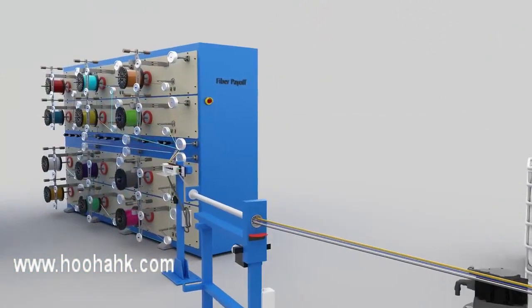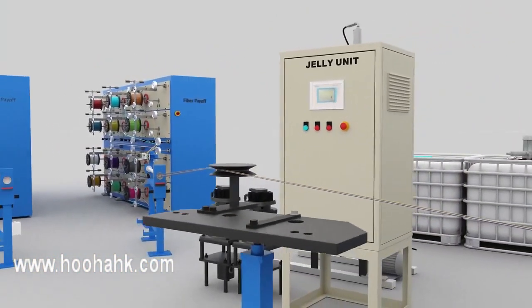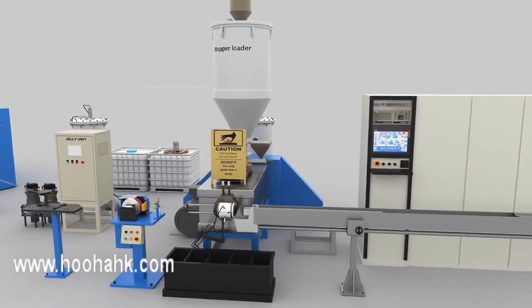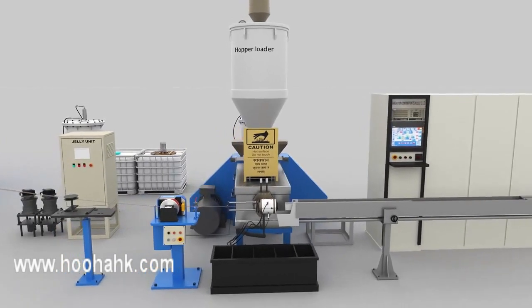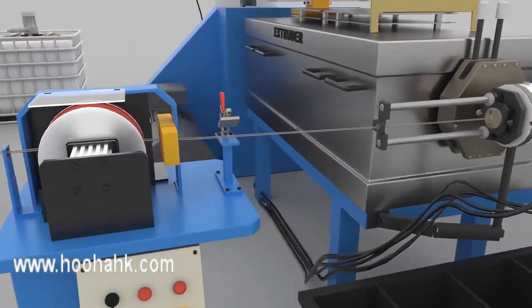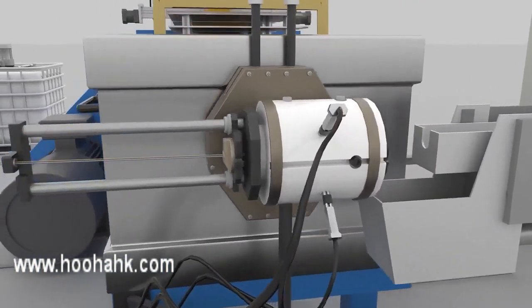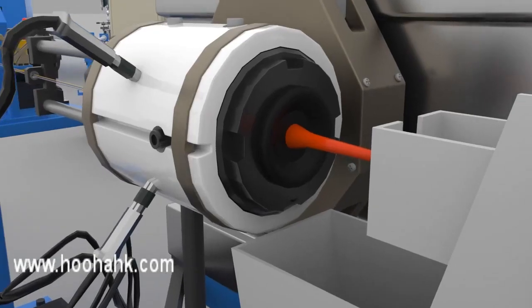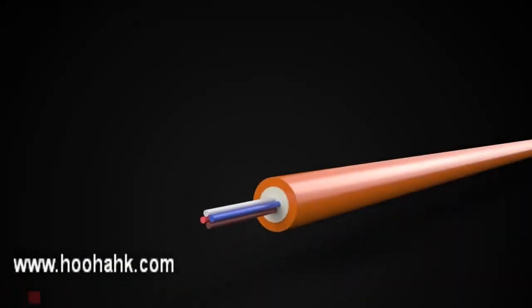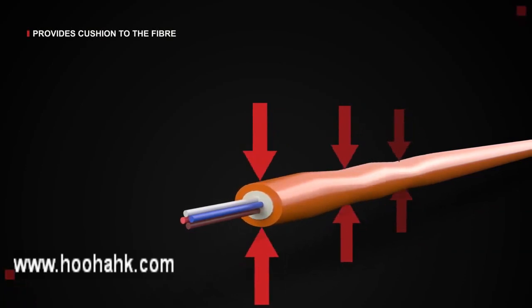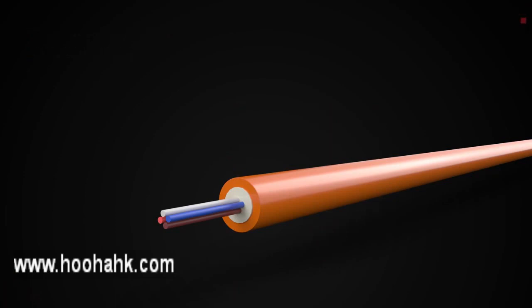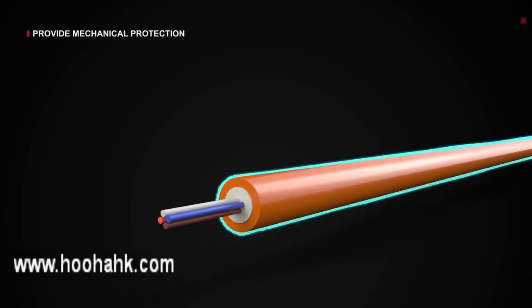The colored fibers or fiber ribbons are fed to the extruder unit via the fiber holder. Jelly is applied inside the loose tube along with the fiber through the jelly pump. The extruder unit then extrudes the PBTP compound to create a loose tube around the fiber. The jelly inside the tube provides cushion to the fiber and prevents water ingress into the loose tube. The outer coating of the loose tube helps provide mechanical protection to the fiber.